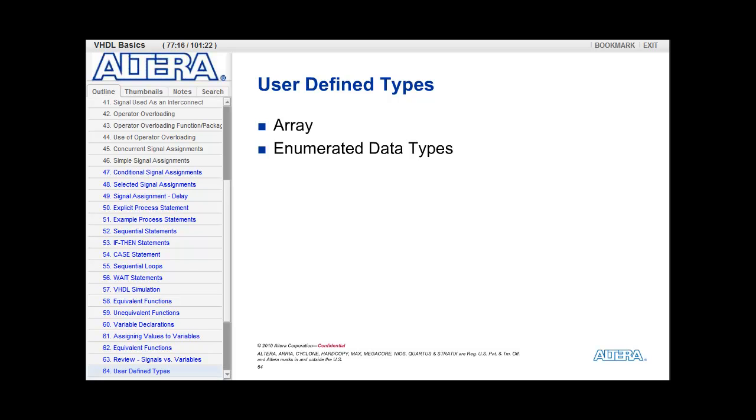VHDL also has support for some user-defined types. Examples of these are the array and the enumerated data type.